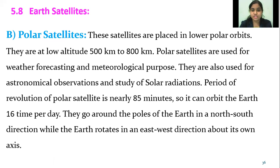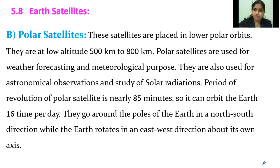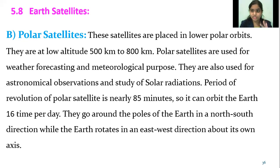Compare this to the geostationary satellite whose period is 24 hours — the polar satellite's period is only 85 minutes. So it can orbit the Earth sixteen times per day. These satellites go around the poles of the Earth in the north-south direction, while the Earth rotates in the east-west direction. So in summary, Earth's satellites include the Moon as a natural satellite, and artificial satellites include geostationary satellites and polar satellites.